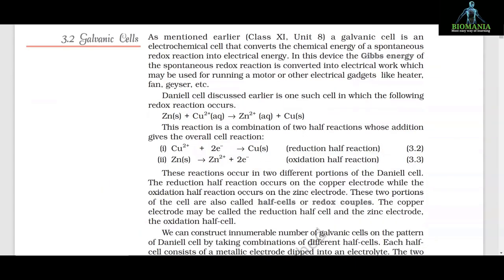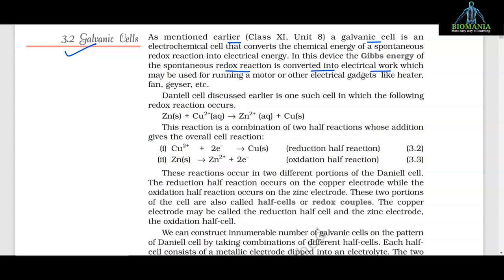3.2 Galvanic cells. As mentioned earlier in class 11th unit 8, a galvanic cell is an electrochemical cell that converts the chemical energy of a spontaneous redox reaction into electrical energy. In this device, the Gibbs energy of the spontaneous redox reaction is converted into electrical work which may be used for running a motor or electrical gadgets like heater, fan, geyser, etc. Daniel's cell is one such cell in which the redox reaction Zn + Cu²⁺ → Zn²⁺ + Cu occurs.